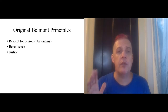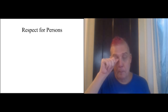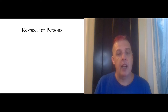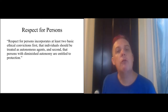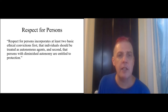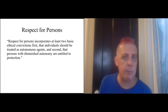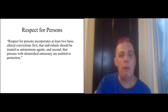What I want to do now is look at each of these principles individually, relate them to other things we've read, and talk about applying them to what we've read so far in The Immortal Life of Henrietta Lacks. The first basic principle is respect for persons. Respect for persons incorporates at least two ethical convictions: first, that individuals should be treated as autonomous agents, and second, that persons with diminished autonomy are entitled to protection. I want to focus on the word autonomy.